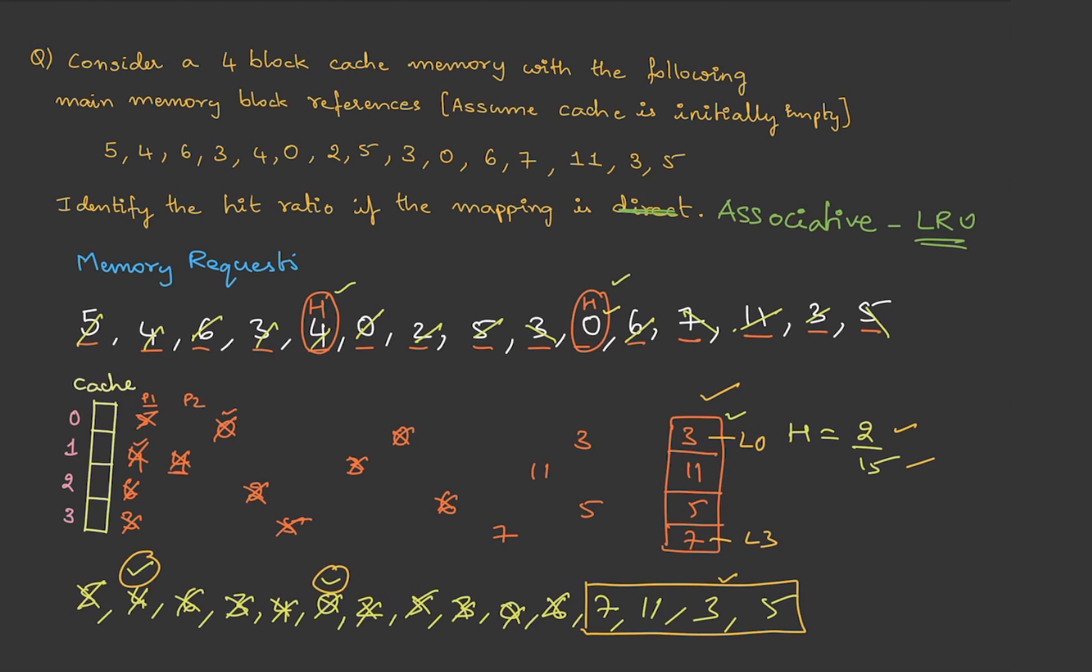Based on the question, if they mention line numbers, go with the vertical approach. If they just ask for number of hits or misses, you can use whichever method is more convenient.